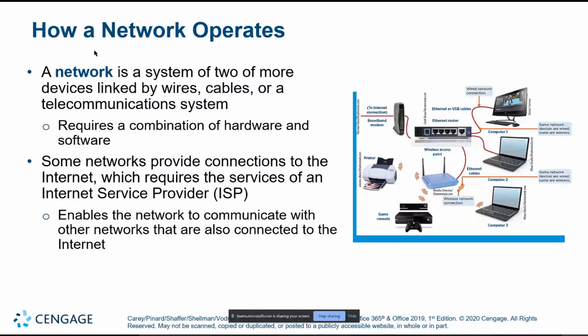Things like the internet, home networks, and so on. Beginning with a foundation: a network is defined as any two or more connected devices, whether wired or wireless, whether local or remote. Any two devices connected and communicating is a network. Setting one up requires both hardware and software. On the hardware side, you need a network interface card, or NIC.